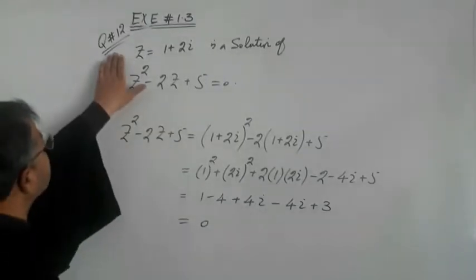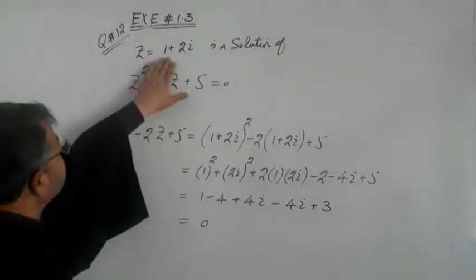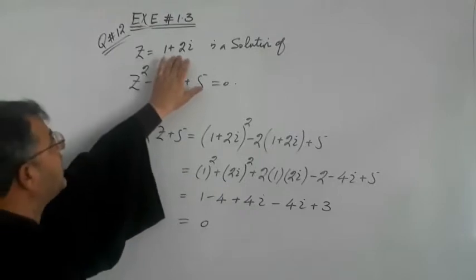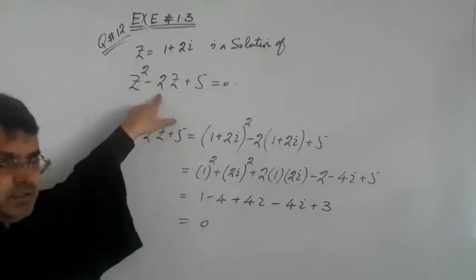Start with the last question. The question is that Z is equal to 1 plus 2i is a solution of this equation.